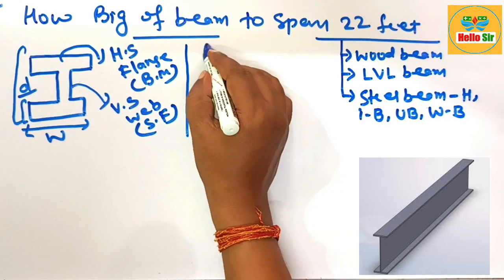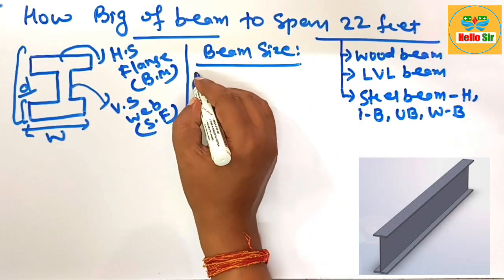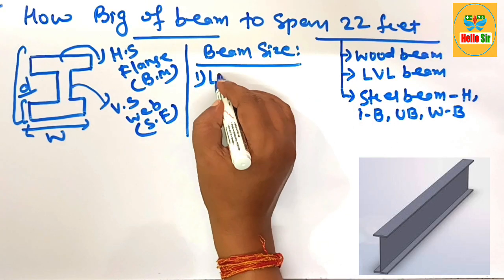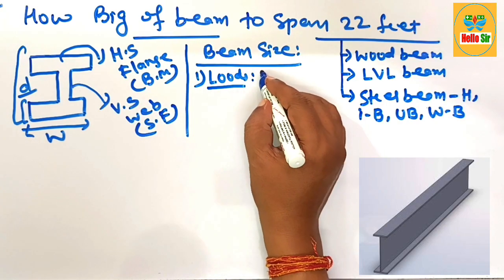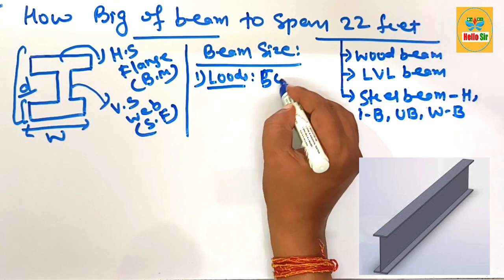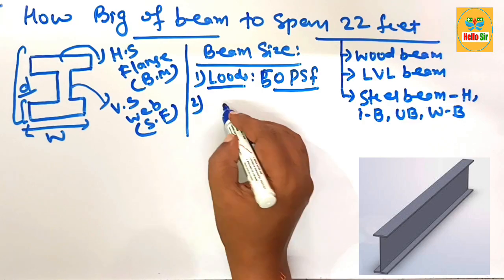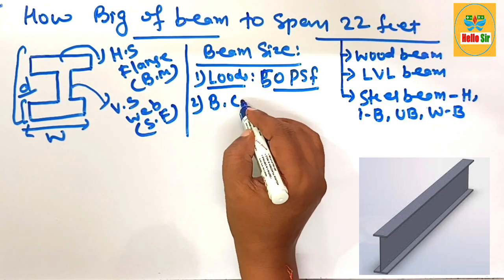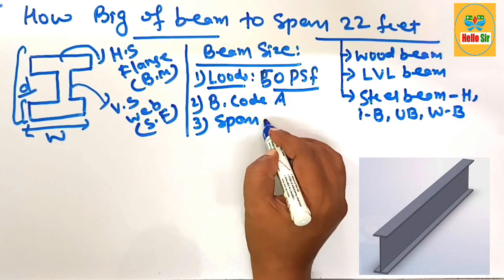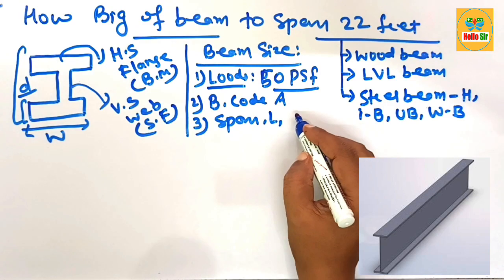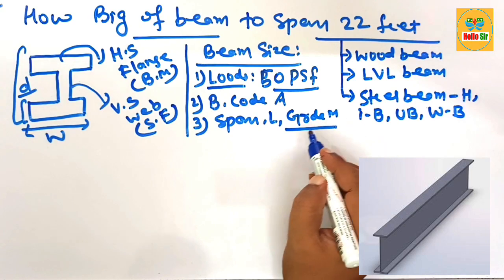Now let's understand the factors that determine beam size. Beam size depends on many factors: the load, which consists of dead load and live load — about 50 pounds per square foot for residential load; the building code in your area; the span length of the beam; and the grade of material used to construct the beam.